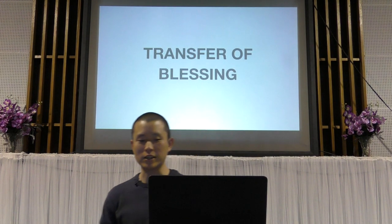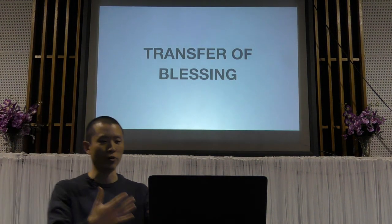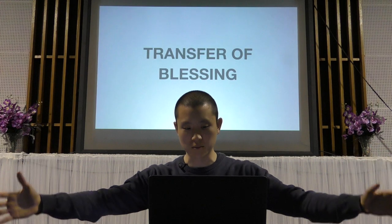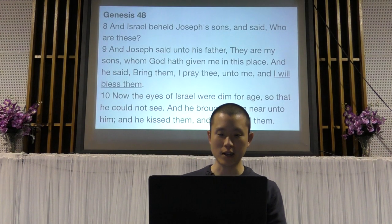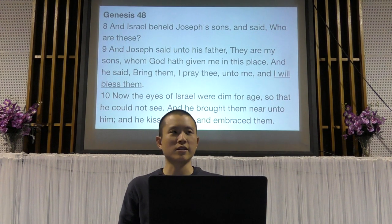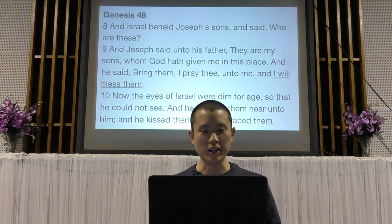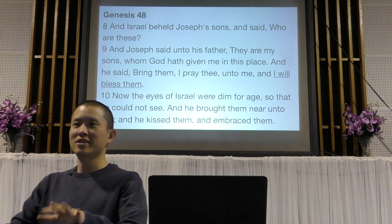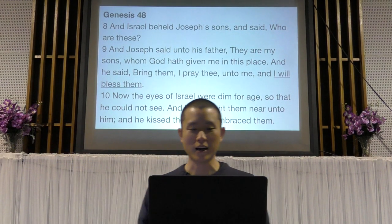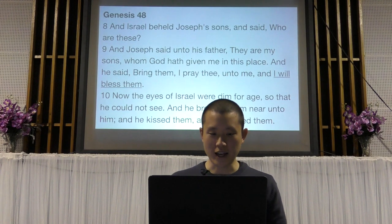The first one is a transfer of blessing. This is more so for prophets in the Old Testament, when they would bless or curse, and often blessing is transferred through somebody putting their hands on somebody. The example we see in the Bible is Jacob, also known as Israel. We see Israel here blessing the sons of Joseph — Ephraim and Manasseh. Israel's eyes were dim for age so that he could not see.